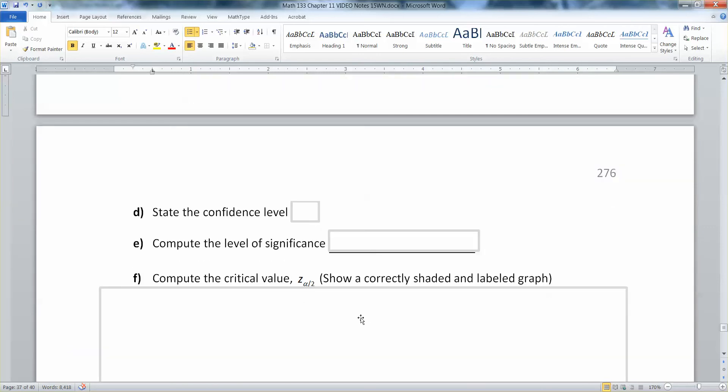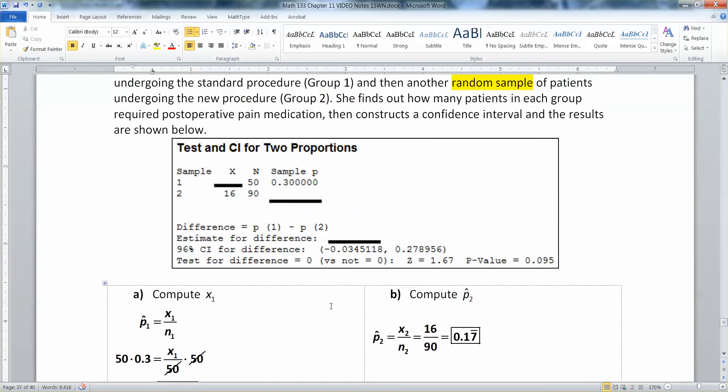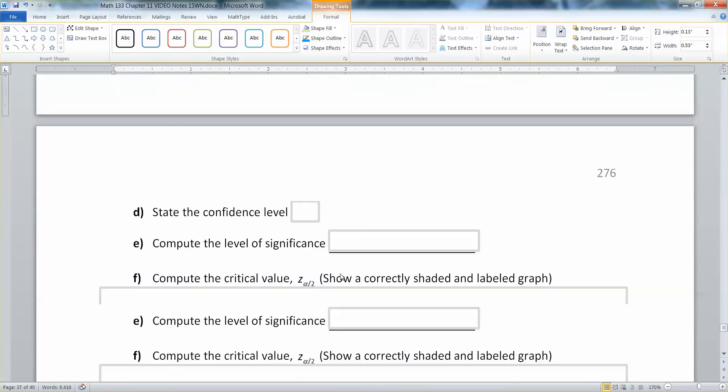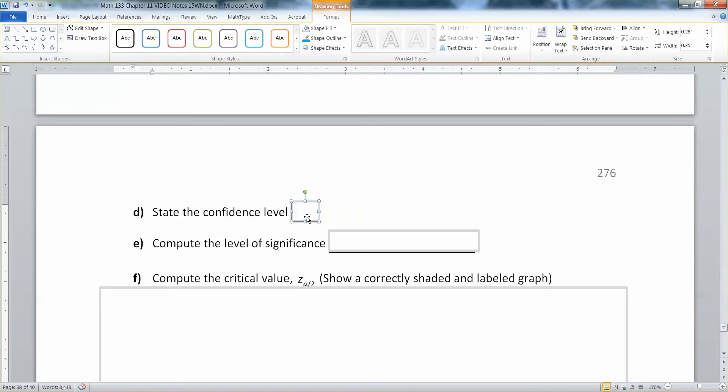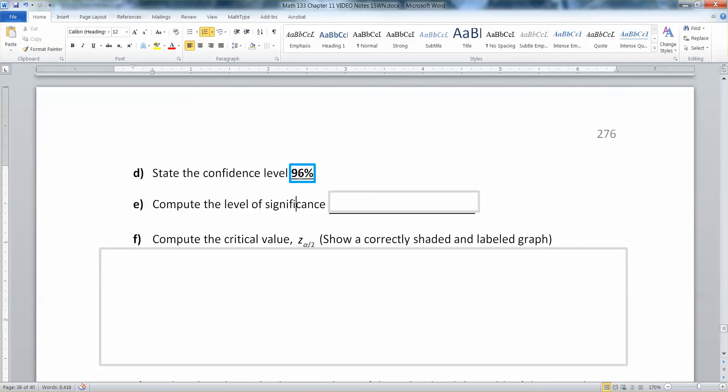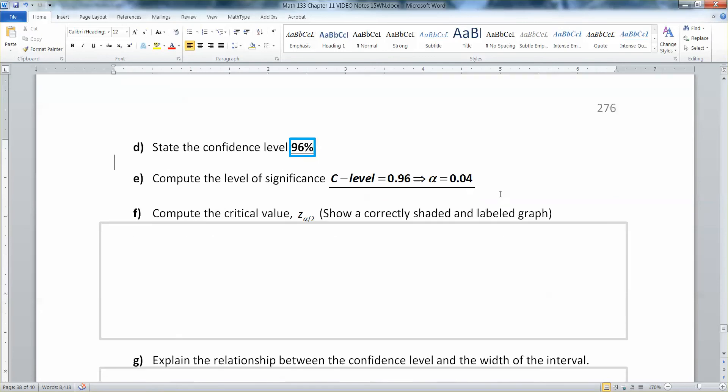Next, we're supposed to state the confidence level. Let's go back. We've got to look for some confidence level in here somewhere. And right over here, it says 96% CI. That's your confidence level. I'm going to give it a bright blue box so we can see it. So my confidence level is 96%. And that means our level of significance will be one minus that, so that would be 0.04. Remember, because confidence level and alpha are complements of each other.